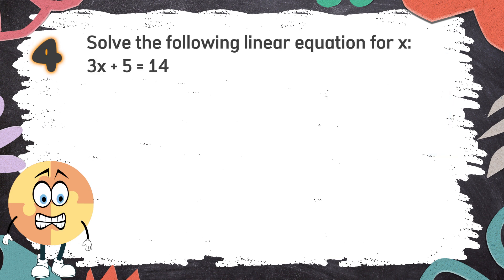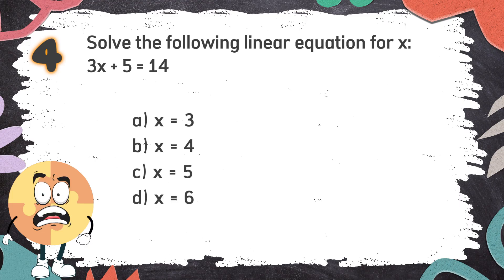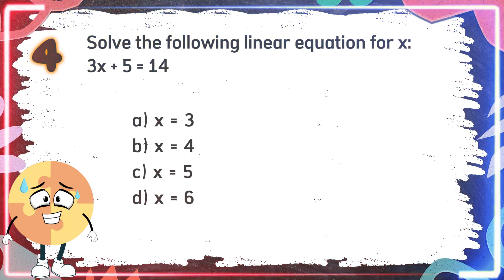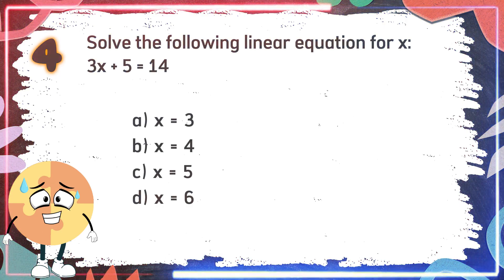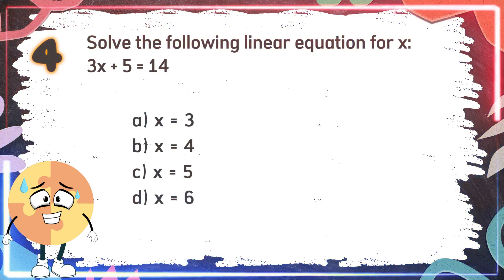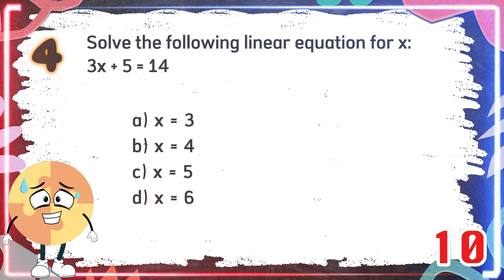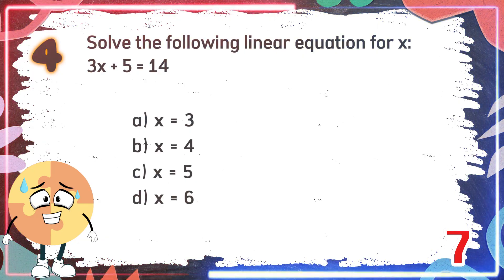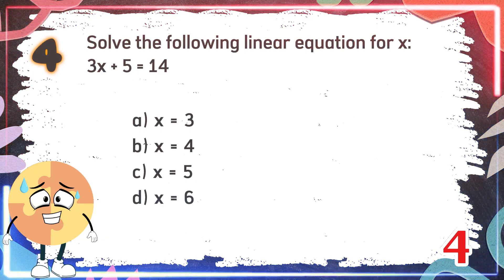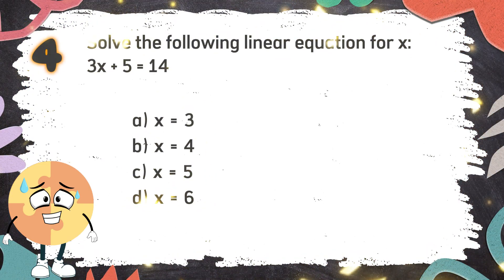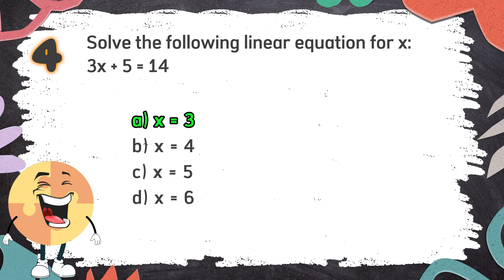Number 4. Solve the following linear equation for X: 3X + 5 = 14. The choices are: A. X = 3, B. X = 4, C. X = 5, D. X = 6. The correct answer is A. X = 3.